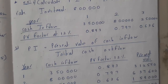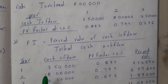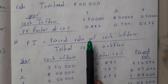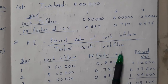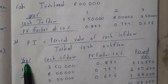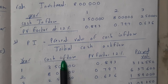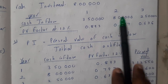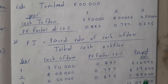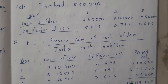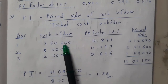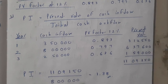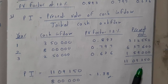PI — that is Profitability Index — is nothing but the present value of cash inflows divided by the initial cash outflow. We know the yearly cash and PV ratio, so just multiply these two to get the present value. Totaling them, we get 11 lakhs 9150.